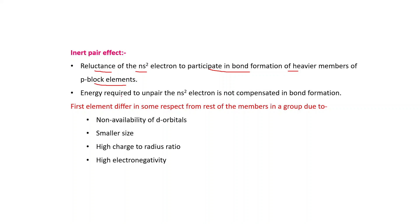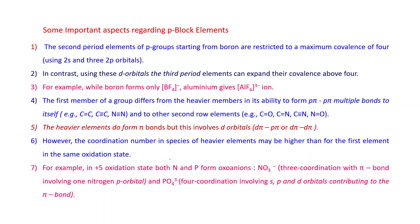The inert pair effect is the reluctance of ns² electrons to participate in bond formation in heavier members of P-block elements. The energy required to unpair the ns² electrons is not compensated by bond formation, so these two electrons do not take part in bonding. The first element of each group also differs from the rest due to non-availability of d orbitals, smaller size, high charge-to-radius ratio, and high electronegativity.